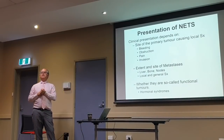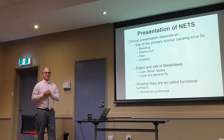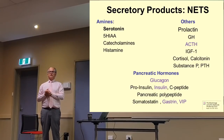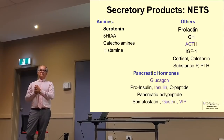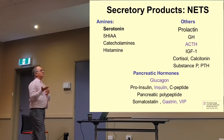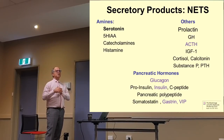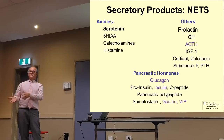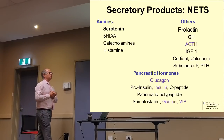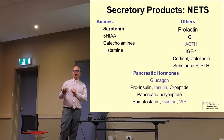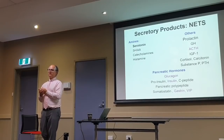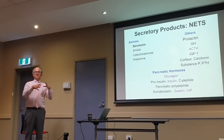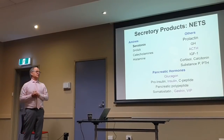NETs can be what we call functional — they can secrete hormones which have an effect on the body, producing a whole variety of different hormones. Small bowel tumours classically cause carcinoid syndrome because they secrete serotonin. Pancreatic NETs can produce hormones such as gastrin, which causes stomach ulcers; glucagon, which causes diabetes; or insulinomas, which cause low blood sugars. You have to be really aware of what type of presentation the patients have. Sometimes the hormones that tumours secrete may change over time — from non-functional to functional.